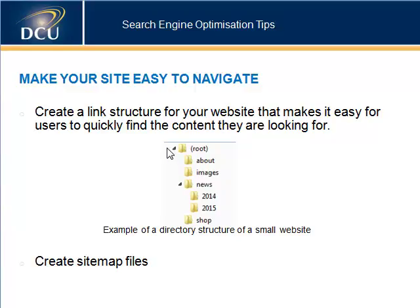Here's an example of a directory structure for a website. Every site has a home or root page, which is usually the most visited page and the starting place from which most visitors navigate. Thought should be given to how visitors will navigate from the home page to pages with more specific content — such as about, images, news, and other subdirectories. Text links will also make your site easier for users and search engines to navigate and crawl.